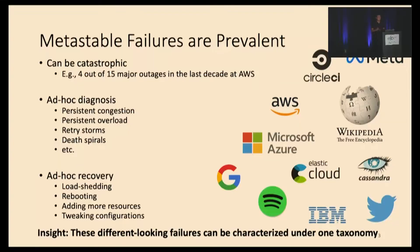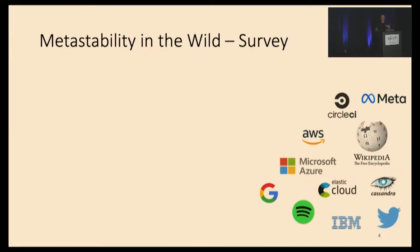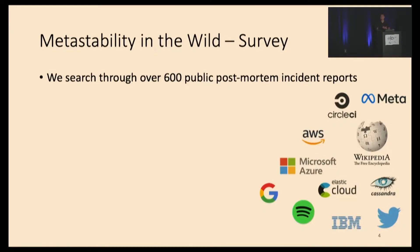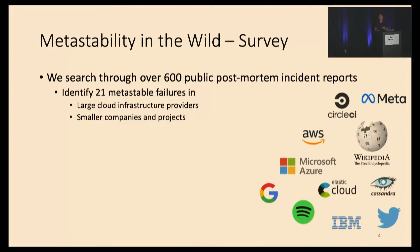Our insight from this work is that these different-looking failures can be characterized under the same taxonomy, and we hope our work will help people understand metastable failures better and think about how to propose solutions to them. We start by conducting a survey on finding metastability in the wild, searching through over 600 public post-mortem incident reports.